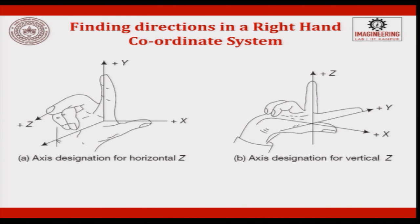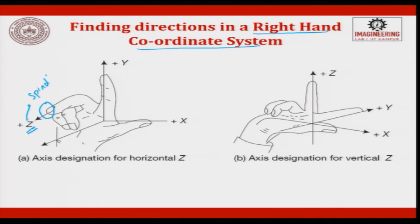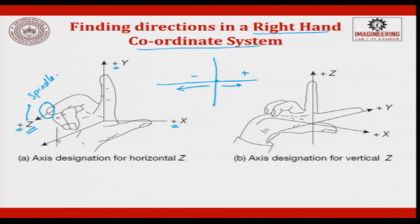Now let us look at how axes are fixed in a CNC machine. They follow the right-hand coordinate system. The perpendicular to the plane will always be z, and this z will be focused towards the spindle. Once z is fixed, you can easily fix x and y. The plus direction is moving towards your right and minus towards your left, as a viewer.